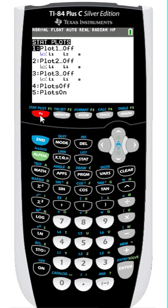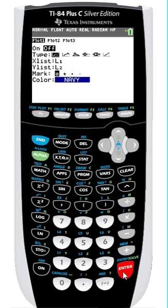In this case, I'm only plotting one particular scatterplot, so I'm going to highlight number 1, which is the default, and I'll press ENTER to edit my parameters for plot 1.